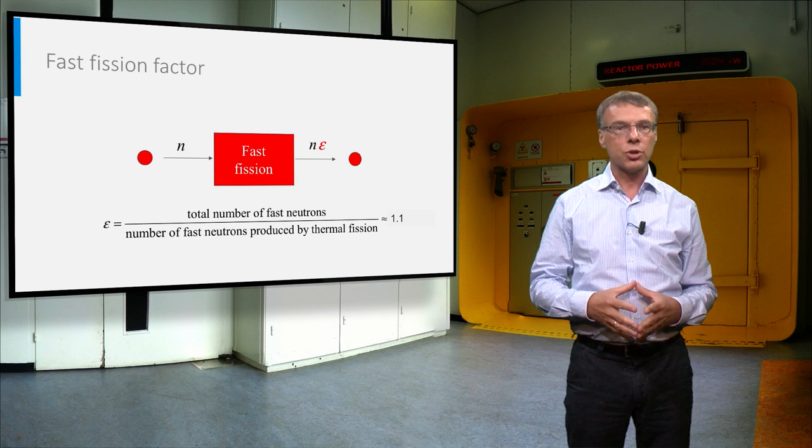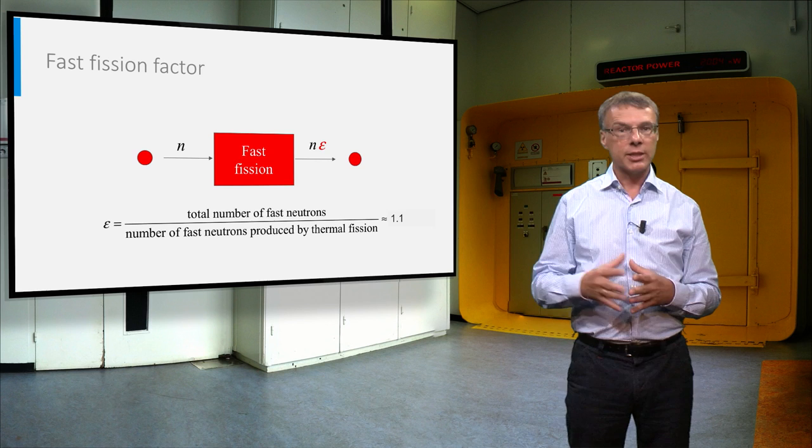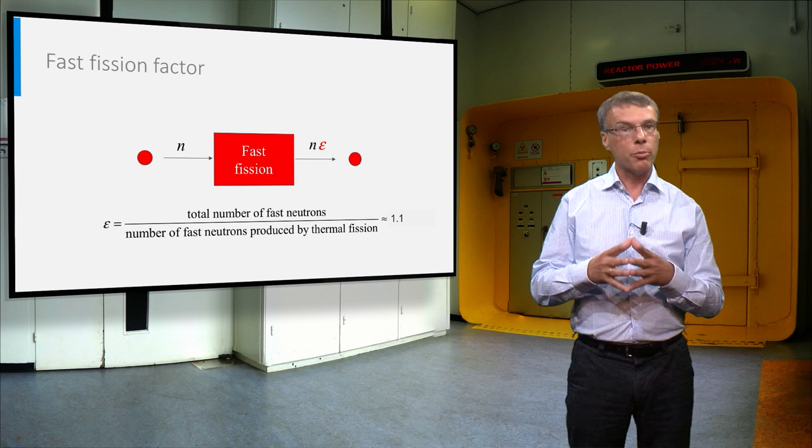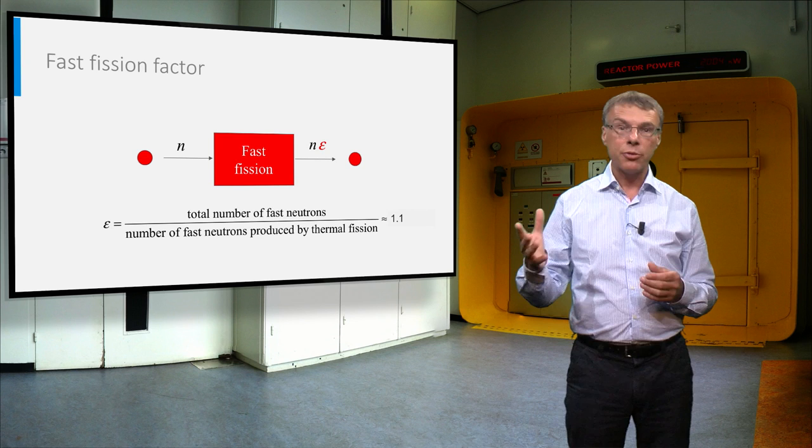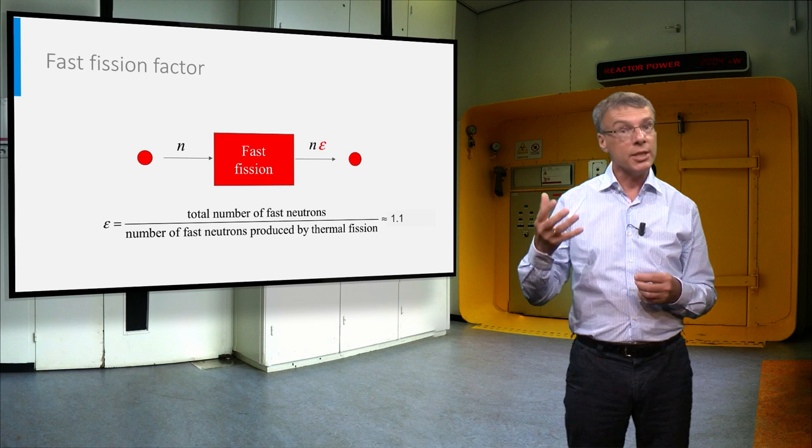We will now follow the fission neutrons in more detail between birth and death. When the neutrons are released at high energy, some of them will be absorbed by uranium-235 or by uranium-238. And although the chance is not very high, some of these absorption processes can lead to fission of uranium.